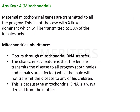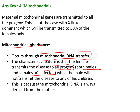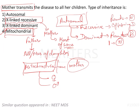To quickly walk through mitochondrial inheritance: it occurs through mitochondrial DNA transfer. The characteristic feature is that the female transmits the disease to all the progeny — both males and females — because mitochondrial DNA is always derived from the mother. So the answer to this question is the fourth option: mitochondrial inheritance.